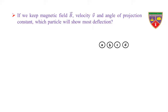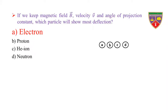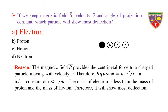If we keep magnetic field B, velocity V, and angle of projection constant, which particle will show most deflection? Option A, electron. Option B, proton. Option C, helium ion. Option D, neutron. The key is electron. Therefore, the correct option is A.